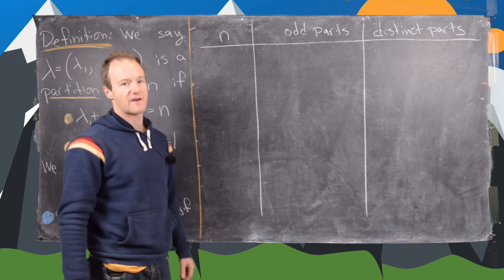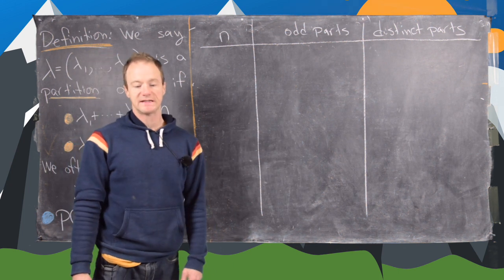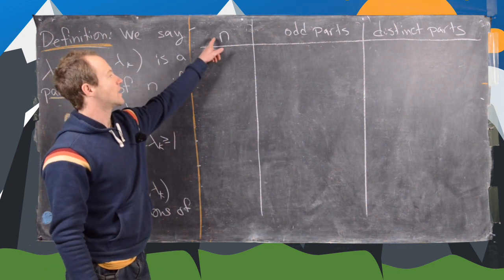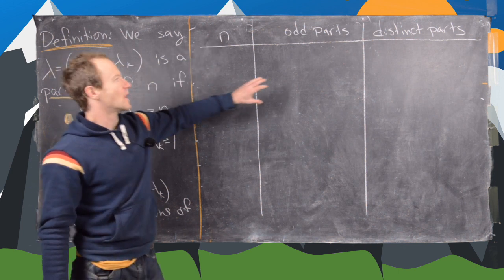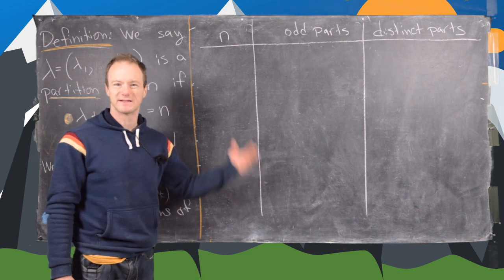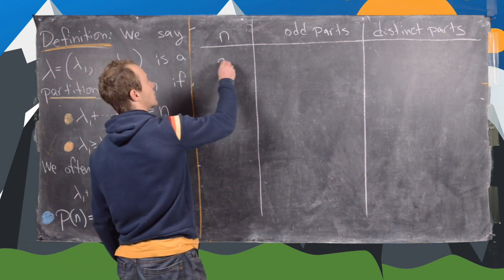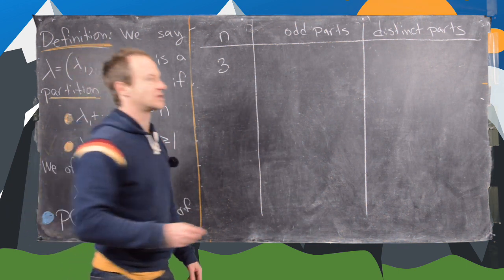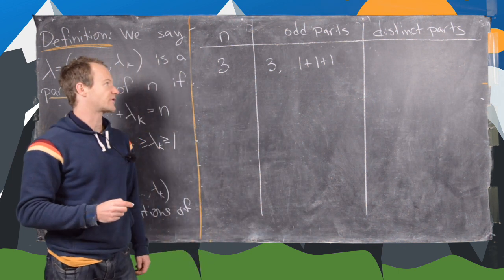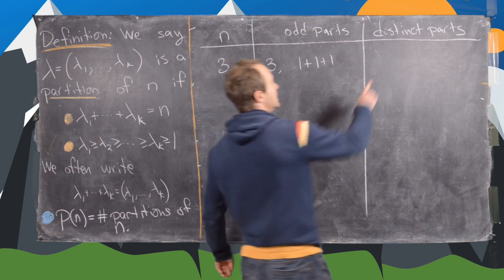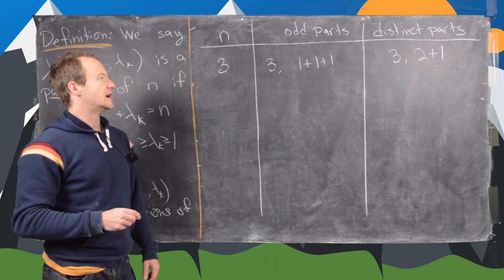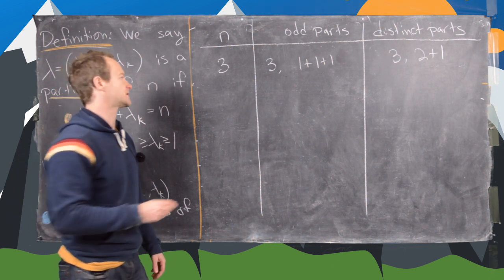The number of partitions of n into odd parts is the same as the number of partitions into distinct parts. Let's provide some numerical evidence with a chart. For n equals 3: partitions into odd parts are 3 and 1 plus 1 plus 1 — note 2 plus 1 uses an even number. Partitions into distinct parts are 3 and 2 plus 1 — note 1 plus 1 plus 1 doesn't have distinct parts. So both counts equal 2. For n equals 4: odd parts give 3 plus 1 and 1 plus 1 plus 1 plus 1. Distinct parts give 4 and 3 plus 1. Both counts equal 2.